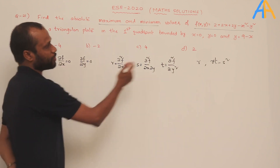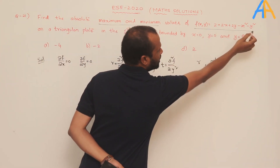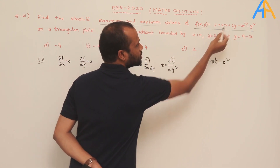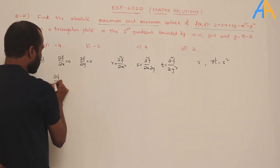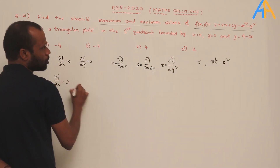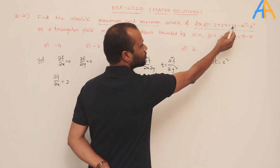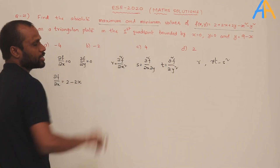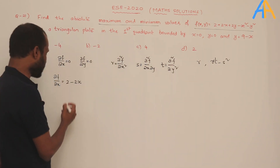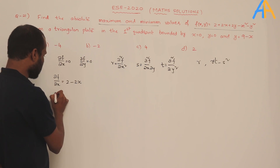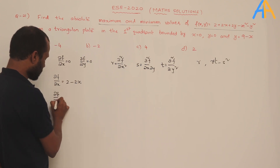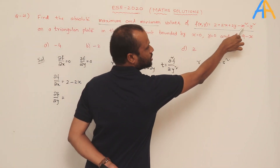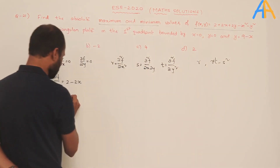Partially differentiating with respect to x: the constant 2 gives 0, 2x gives 2, 2y (treated as constant) gives 0, −x² gives −2x, and −y² gives 0. So ∂f/∂x = 2 − 2x. Similarly, ∂f/∂y = 0 + 0 + 2 − 2y = 2 − 2y.